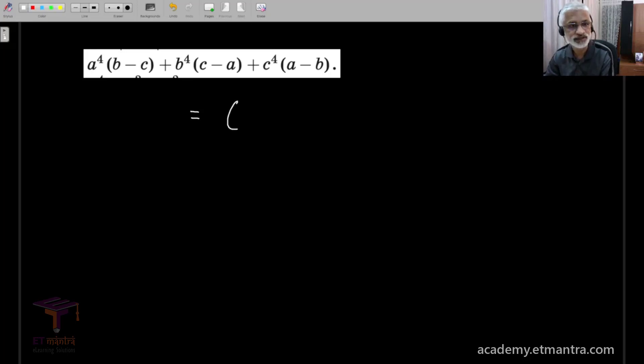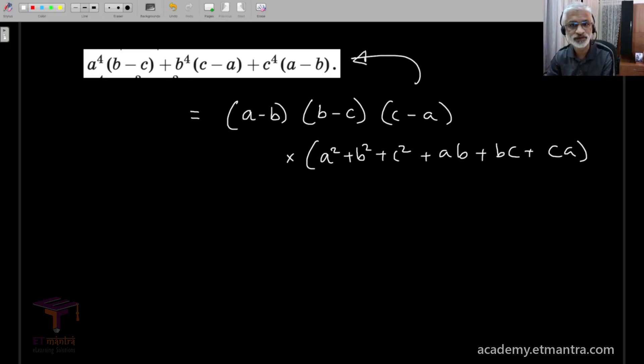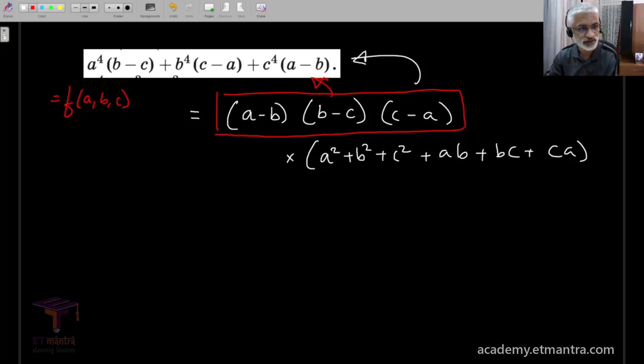And then we'll try to see how one would reason out that these are the factors of this particular problem. So it turns out that a minus b into b minus c into c minus a into a square plus b square plus c square plus a b plus b c plus c a is the answer to this problem. So, first let me justify how it's very easy to realize that this is a factor of this polynomial of three variables. You could just substitute a equal to b and see that it goes to 0. But another way is to realize that this is actually equal to minus of f(b, a, c) and this implies that the polynomial is anti-symmetric.